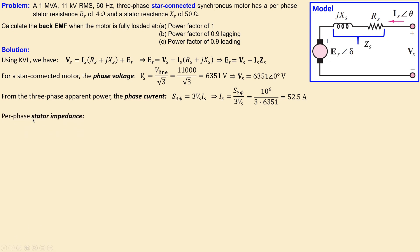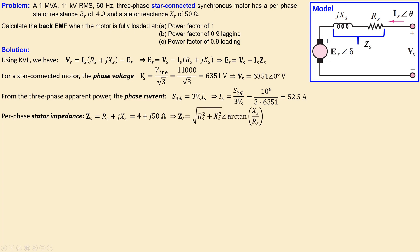The per-phase stator impedance ZS is the series combination of RS and the stator reactance, which is 5 + j50. Converting to polar representation using the magnitude and phase formula, we get 50.2 ohms with a phase orientation of 85 degrees. We will use this later in our calculations.